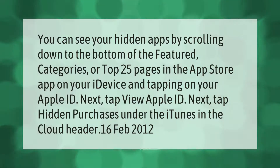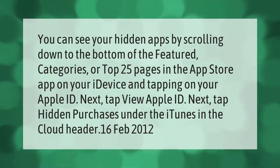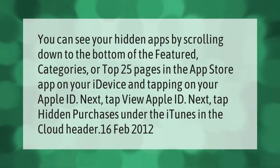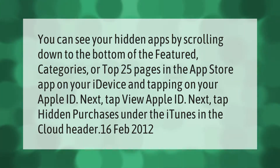You can see your hidden apps by scrolling down to the bottom of the Featured Categories or Top 25 pages in the App Store on your iDevice and tapping on your Apple ID. Next, tap View Apple ID, then tap Hidden Purchases under the iTunes in the Cloud header.